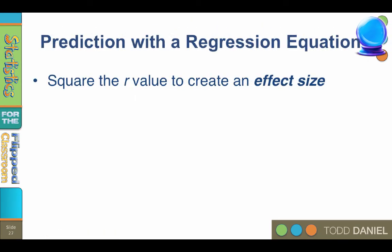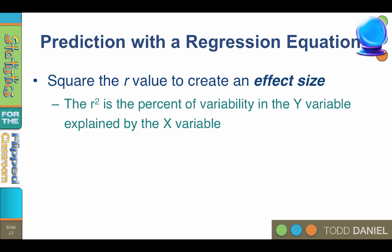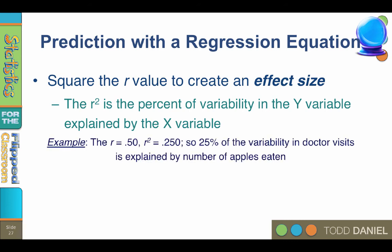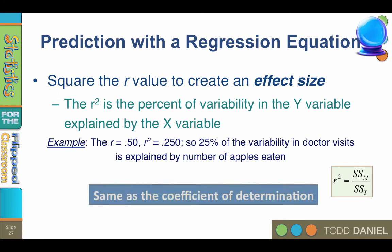Once you have a predictive model, you can square the correlation value to create an effect size. R-squared is the percent of variability in the Y variable explained by variability in the X variable. For example, if the R correlation is 0.5, then R-squared would be 0.25, meaning 25% of the variability in doctor visits was explained by number of apples eaten. You can refer to the coefficient of determination in the correlation notes for more information. We are now ready to learn how to create a regression equation by hand and then using SPSS.